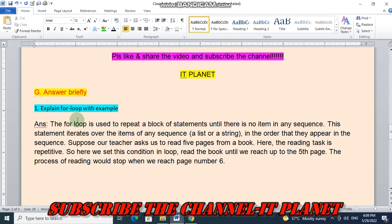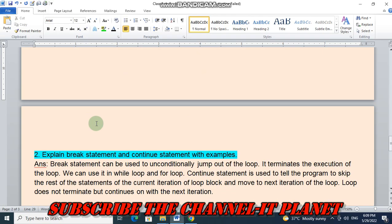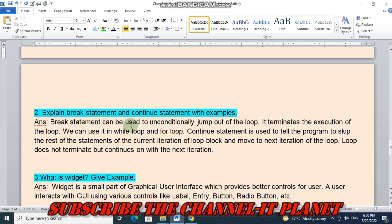Second question is explain break statement and continue statement with examples. A break statement can be used to unconditionally jump out of the loop. It terminates the execution of the loop. We can use it in while loop and for loop. Continue statement is used to tell the program to skip the rest of the statements of the current iteration of loop block and move to the next iteration of the loop. Loop does not terminate but continues on with the next iteration.